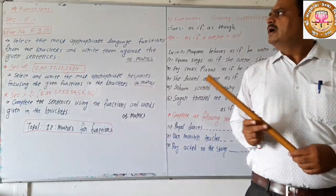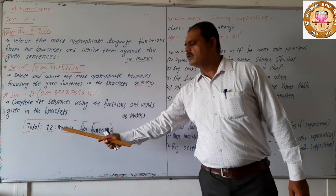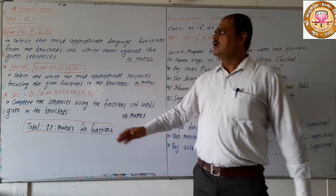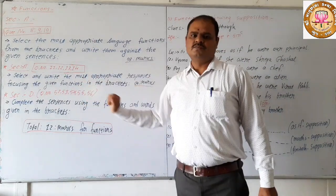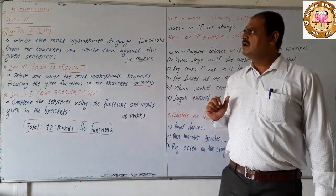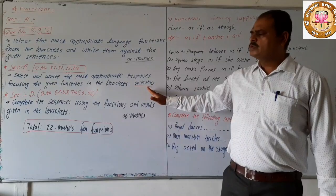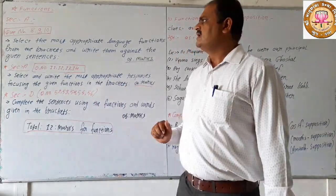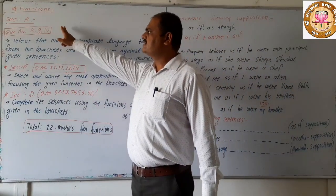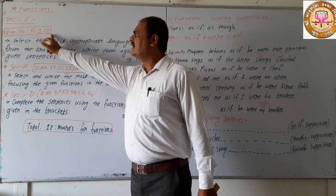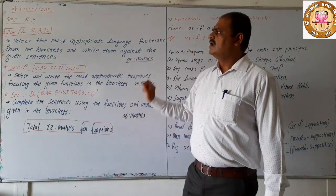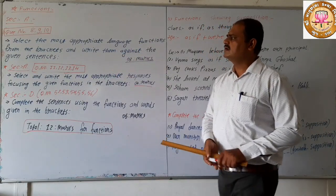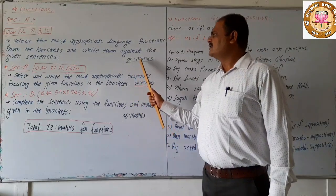In the code, language functions have a total of 12 marks of weightage. Language functions are asked in three different forms. So before learning functions, we will try to learn how functions are asked in the exam. In Section A, question numbers 8, 9, and 10: select the most appropriate language function from the brackets and write it against the given sentences — three marks.